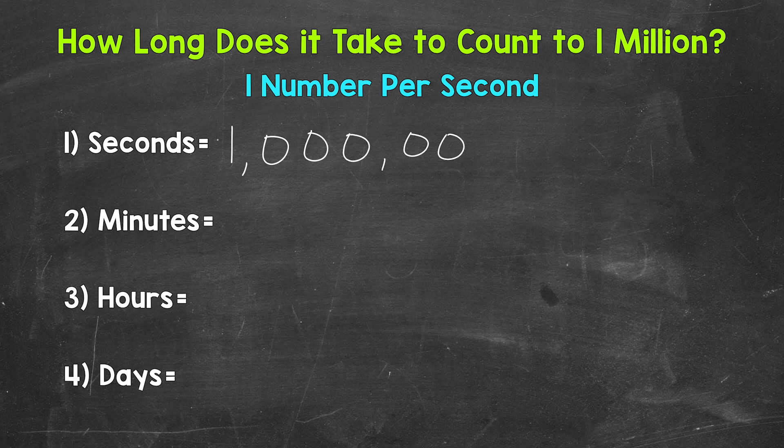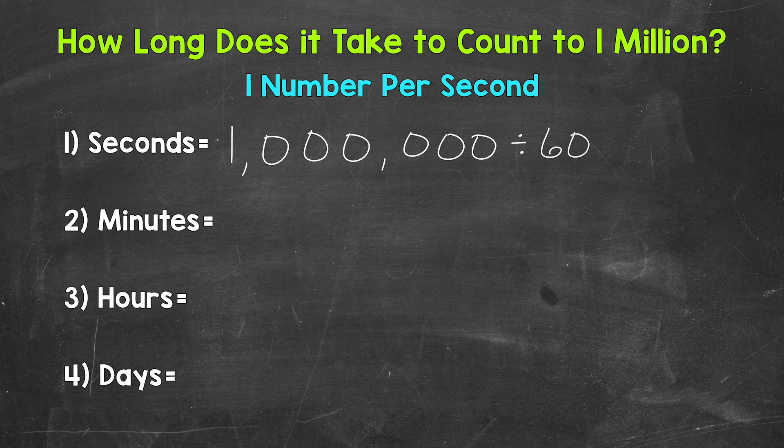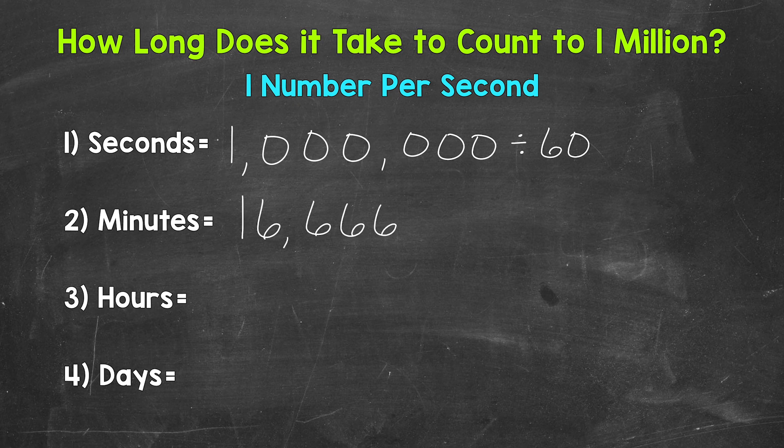Now, if we take those seconds and divide by 60, we get this to minutes. That gives us 16,666 and 67 hundredths. Now that decimal was rounded to the hundredths place.